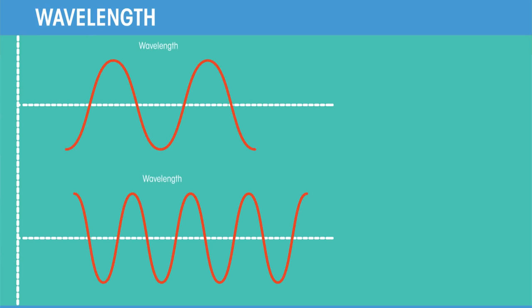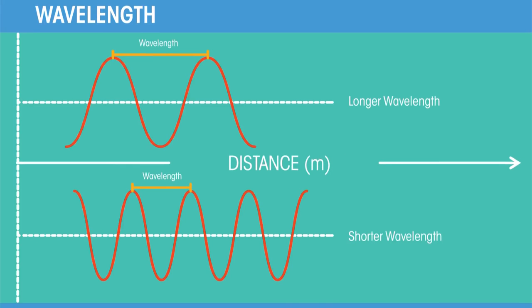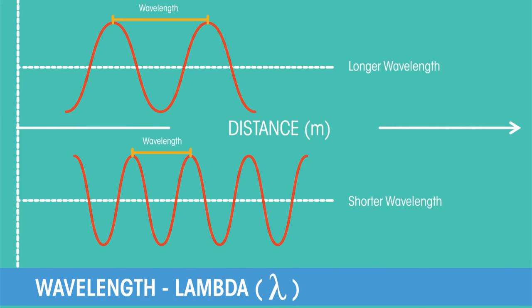Now for wavelength. The wavelength is the distance between a point on one wave and the same point on the next wave. For example, two peaks or two troughs. Wavelength is given the symbol lambda from the Greek letter and is usually measured in meters.